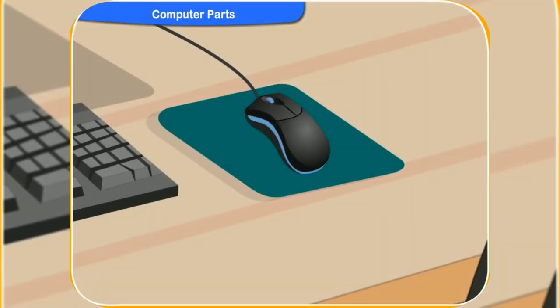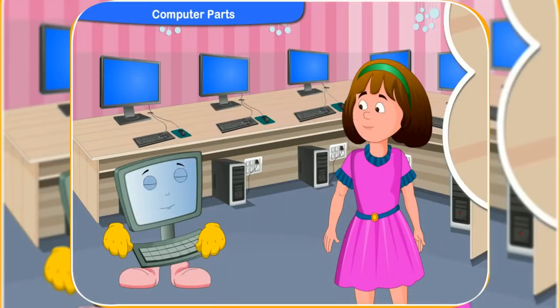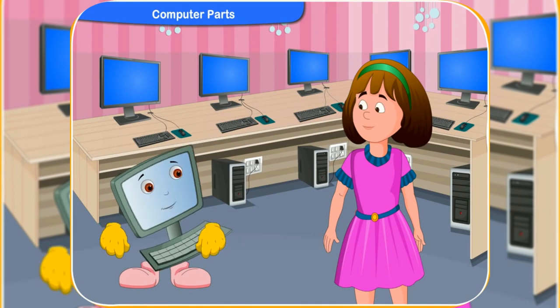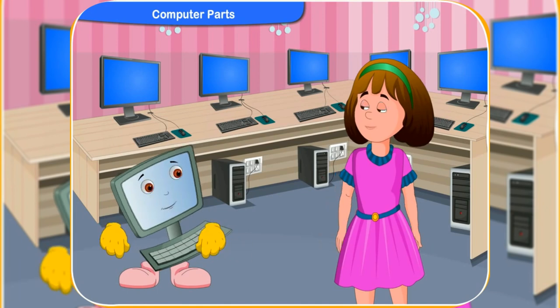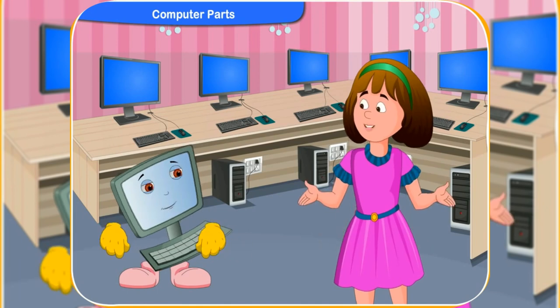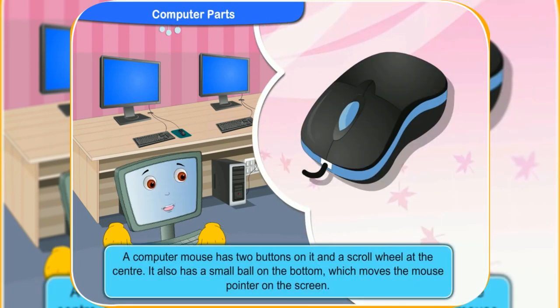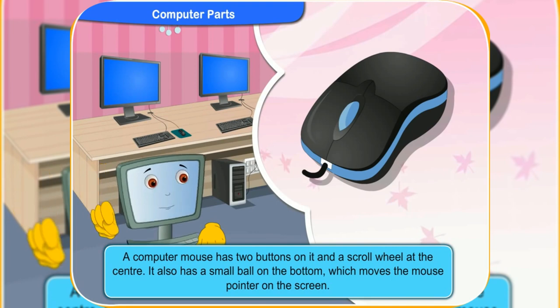What is this, Clicko? It has a wire attached to it and it's like a tail. It looks like a mouse. It is a mouse, Rennie. A mouse? How can it be? It is not a living thing. It is a computer mouse, Rennie.